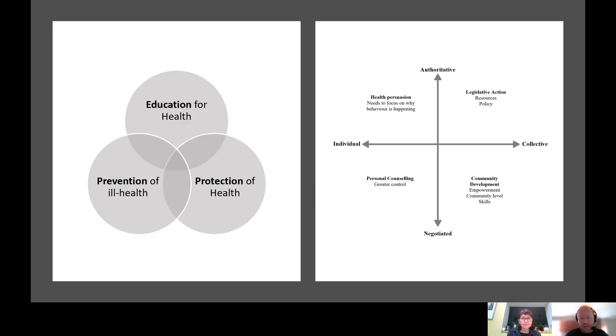In essence, it's built upon two axes. The Y-axis, which is the vertical axis, looks at whether the intervention in health promotion is negotiated with individuals and communities or whether it's more authoritative and what we might call top down. Then across the X-axis or the horizontal axis, you've got a more collective approach to thinking about how we address population health versus more individually focused interventions and approaches. By putting those two axes together, you come up with four quadrants.